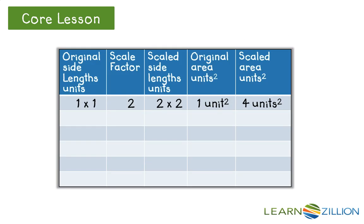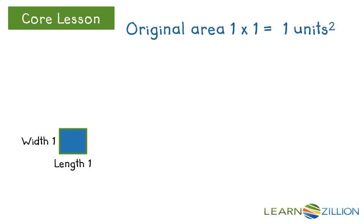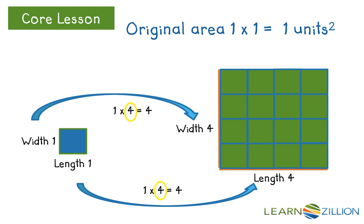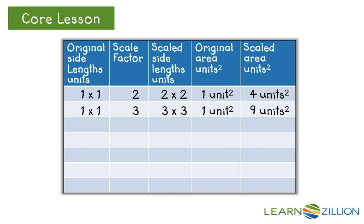Now we will add this to our table and continue with the pattern. Let's generate a scale drawing, this time with a scale factor of 4. The original drawing dimensions once again are 1 unit by 1 unit for length and width. When we multiply by a scale factor of 4, the scale drawing has dimensions of 4 by 4 units. You can see by the units in the scale drawing that the area is now 16 square units. Let's enter the data from the scale factor of 4 into our table.